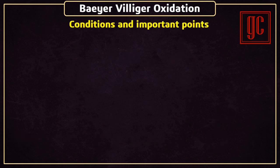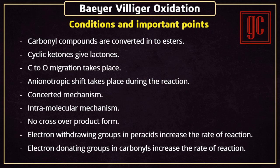Next are the conditions and important points of this reaction. Carbonyl compounds are converted into esters. Cyclic ketones give lactones as the final product. Carbon to oxygen migration takes place. Anionotropic shift takes place during the reaction. The concerted mechanism is followed, and the reaction follows an intramolecular mechanism. No crossover product forms in this reaction. Electron-withdrawing groups in peracids increase the rate of reaction, while electron-donating groups in carbonyls also increase the rate of reaction.